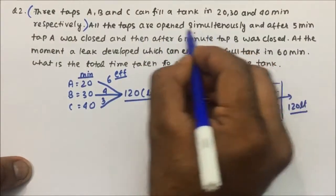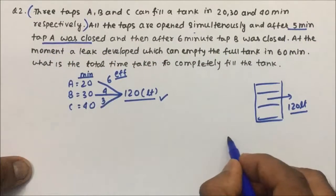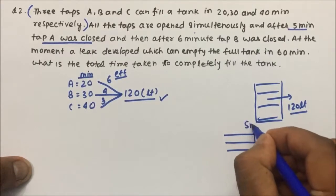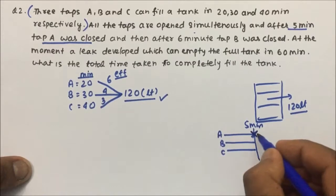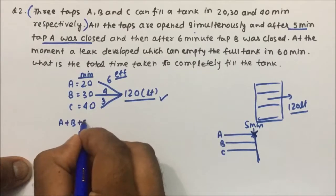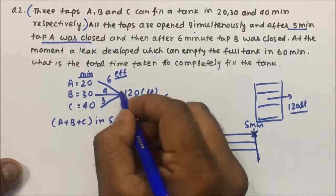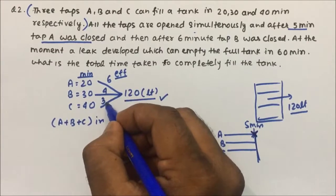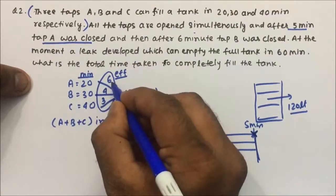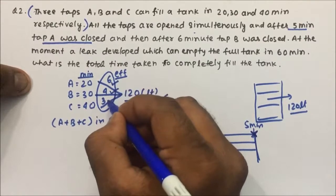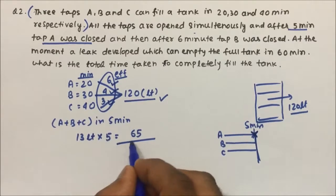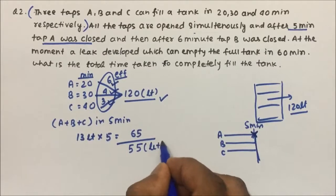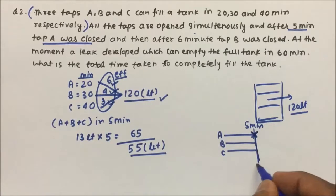All the taps are opened simultaneously, and after 5 minutes tap A was closed. So for 5 minutes all three pipes were filling water. A can fill 6 liters per minute, B can fill 4 liters per minute, and C can fill 3 liters per minute. Together A plus B plus C fill 13 liters per minute. Opened for 5 minutes, they fill 65 liters. Subtracting from 120, 55 liters remains to be filled.